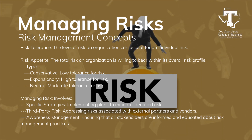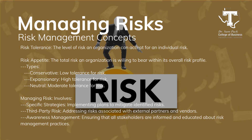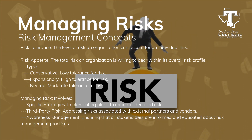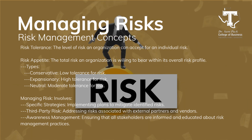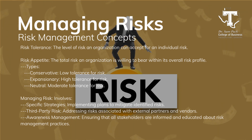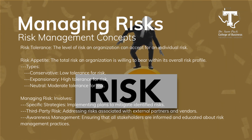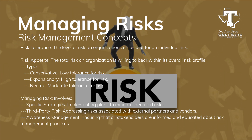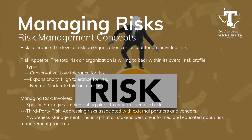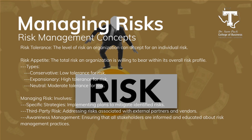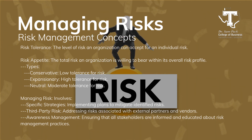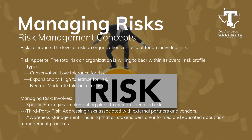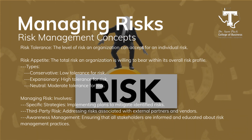When managing risks, understanding your risk tolerance and risk appetite is crucial. Risk tolerance is the level of risk your organization is willing to accept for individual risks — the maximum amount of risk you're okay with on a case-by-case basis. Risk appetite refers to the total amount of risk your organization can bear overall, and it can vary: conservative organizations prefer to avoid risk as much as possible; expansionary organizations are open to higher levels of risk for potential growth; and neutral organizations maintain a balanced approach. Managing risk also involves addressing third-party risks and applying awareness management to keep everyone informed and prepared.